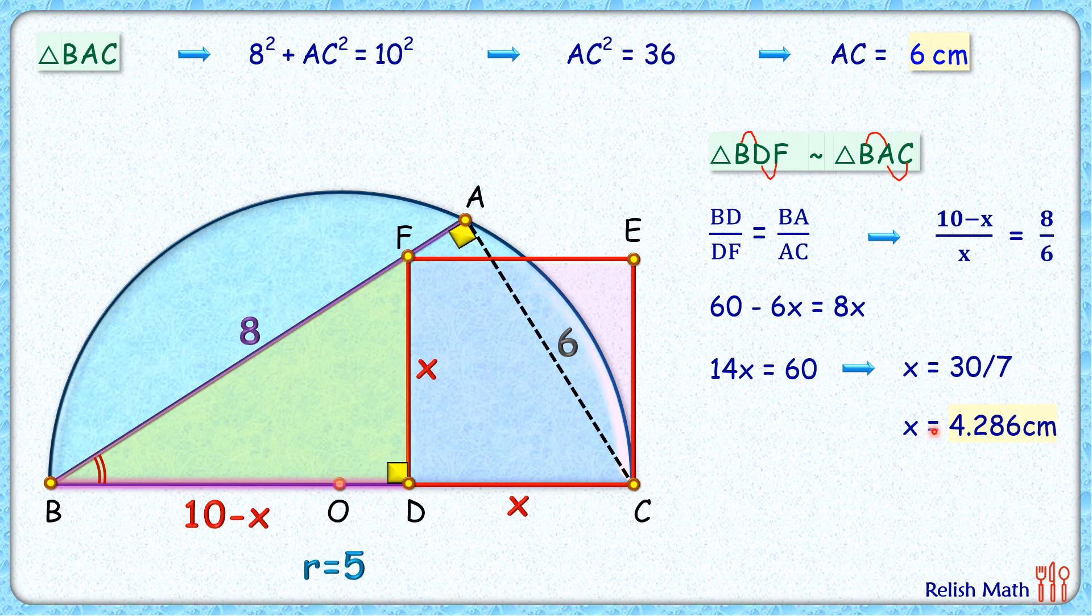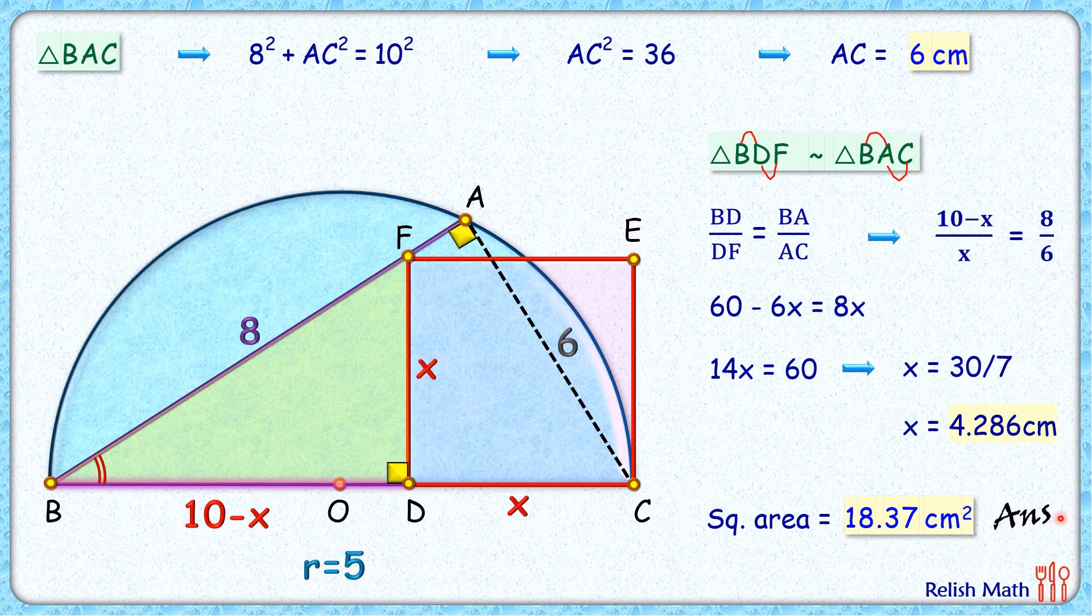In decimal form, x, the side length of the square, is 4.286 cm, and area of the square, of course, is x squared, or 4.286 squared, that is 18.37 cm squared. And that's our answer.